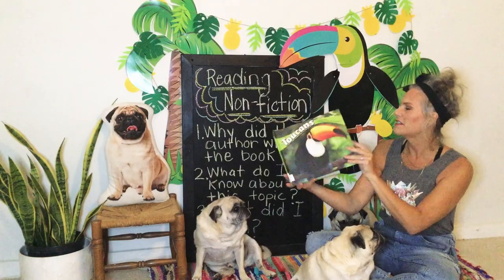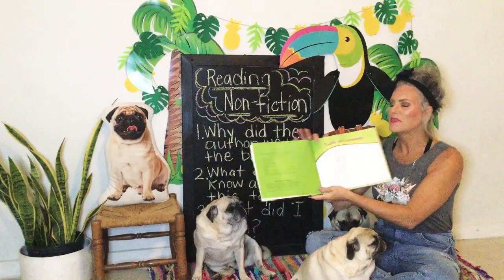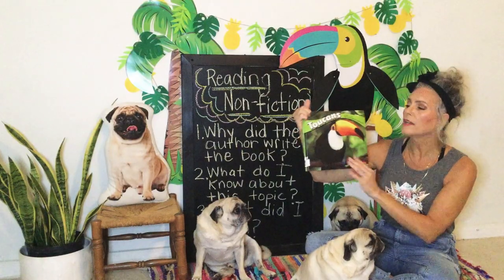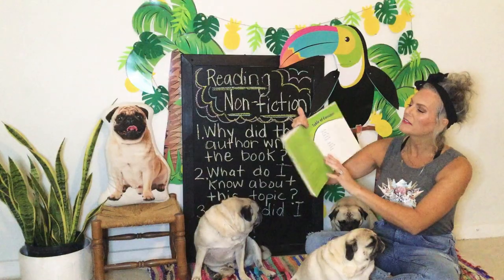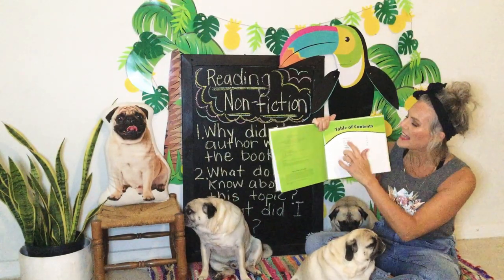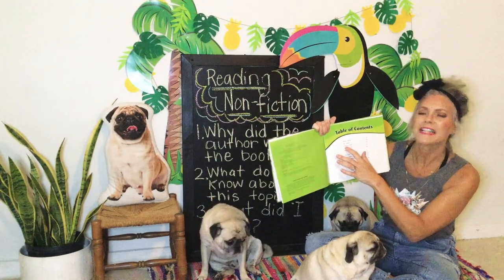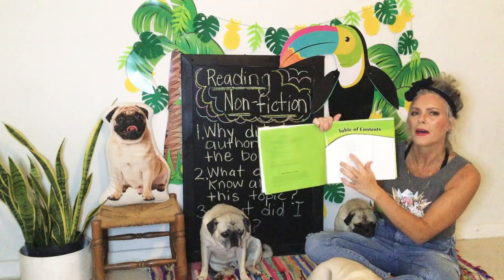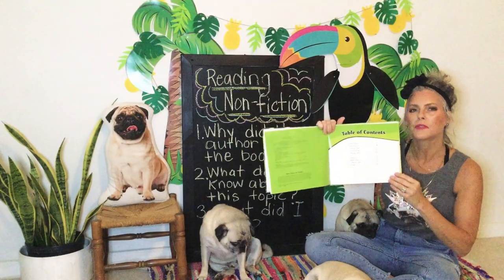Toucans, by Mary R. Dunn. I want to show you something that a nonfiction book has — one of the features. We've already seen one feature of a nonfiction book: it's a photograph. This is another nonfiction text feature called a table of contents. If I want to know something like how toucans find food, it gives me the different things I'm going to learn about in the book and I can just go to that page — finding food would be on page 12.